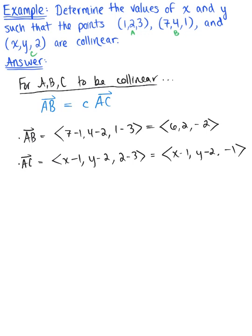And so we want these to be scalar multiples of each other. So we need to solve 6, 2, negative 2 is equal to a scalar multiple, C, of x minus 1, y minus 2, negative 1. And this is, of course, such that C is our scalar, a real number.